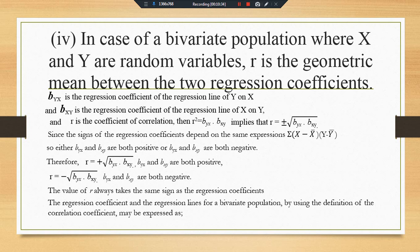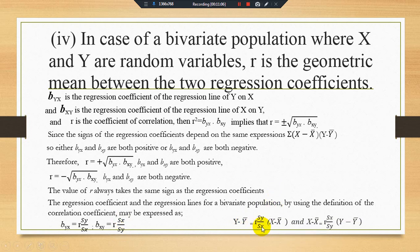The regression coefficient for the bivariate population, using the definition of correlation coefficient, may be expressed as: b-yx is equal to r times s-y divided by s-x, and b-xy (where x is dependent and y is independent) is equal to r times s-x divided by s-y. The regression lines become: y minus y-bar equals r times (s-y divided by s-x) times (x minus x-bar), and x minus x-bar equals r times (s-x divided by s-y) times (y minus y-bar). This confirms that r is the geometric mean between the two regression coefficients.